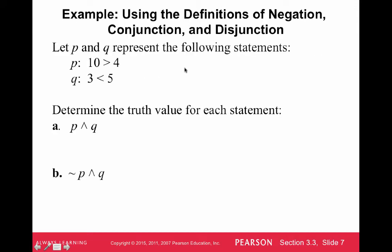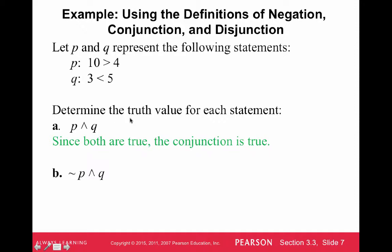Let's take a look at some examples. P and Q represent the following statements: P is '10 is greater than 4,' and Q is '3 is less than 5.' Is 10 greater than 4? Yes, that's true. Is 3 less than 5? That's also true. So both statements are true. Now, P ∧ Q — since P is true and Q is true, and both need to be true for a conjunction to be true, this statement is true.